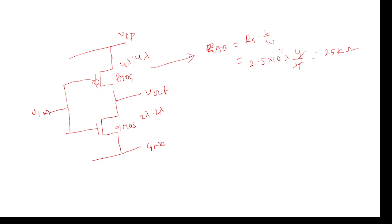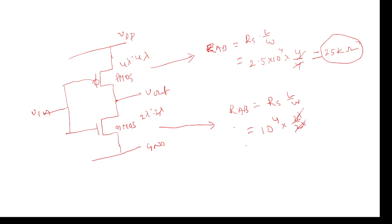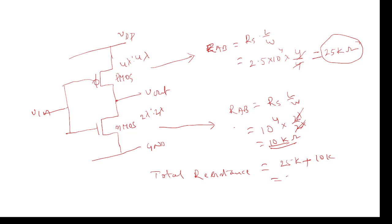So the pull-up P-MOS transistor has internal resistance of 25 kilo-ohms. For the pull-down N-MOS transistor: RAB = RS × (L/W) = 10⁴ × (2λ/2λ) = 10⁴ = 10 kilo-ohms. Both transistors are in series in the resistance path, so total resistance = 25 kilo-ohms + 10 kilo-ohms = 35 kilo-ohms.